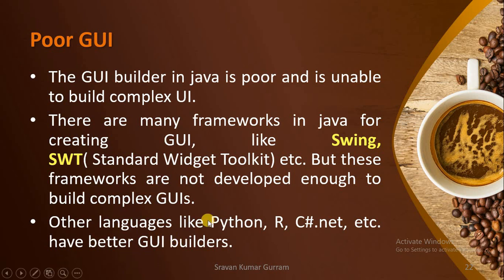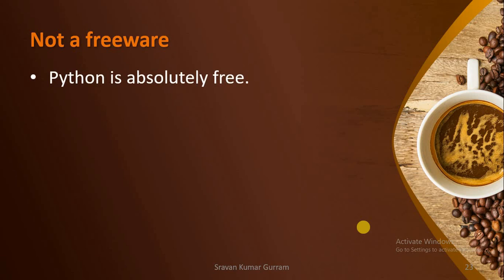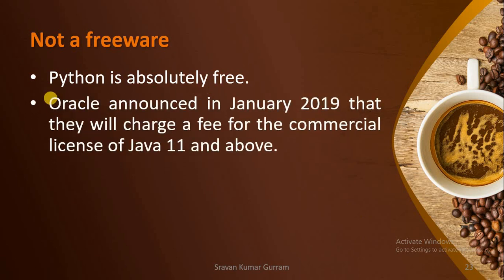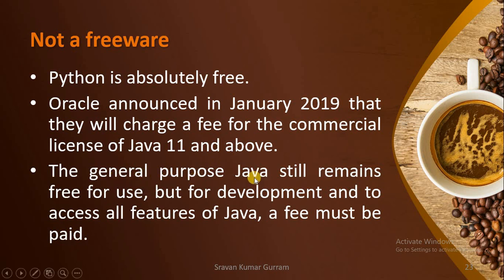If you look at other programming languages like Python, R, and C#, they have better GUI builders. The next disadvantage is that Java is not freeware. Python is absolutely free. But in the year 2019, Oracle announced that they will charge a fee for the commercial license of Java version 11 and above. Even though the general purpose use of Java still remains free, for development and to access all the features of Java, you must pay a fee. So Java is not freeware.